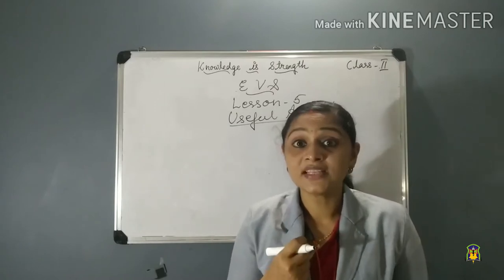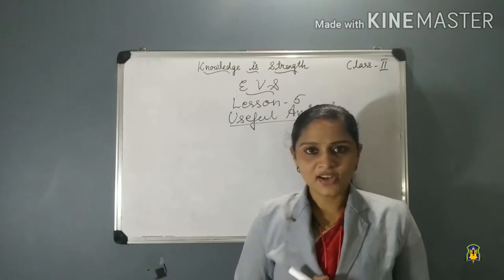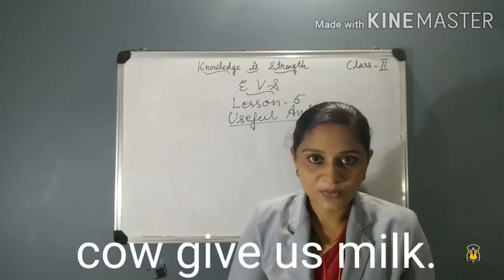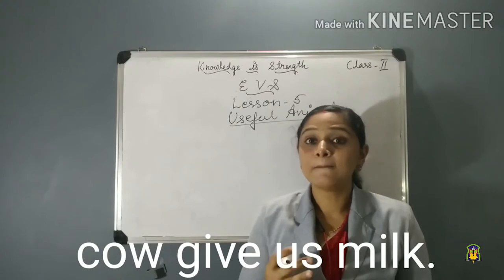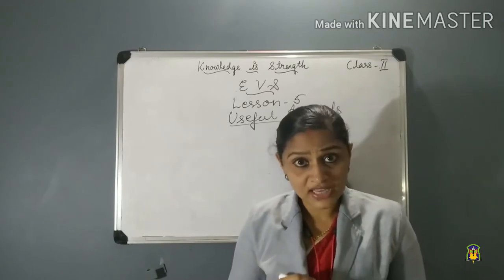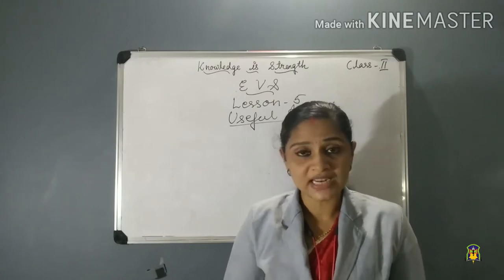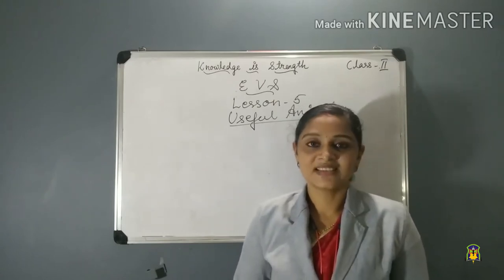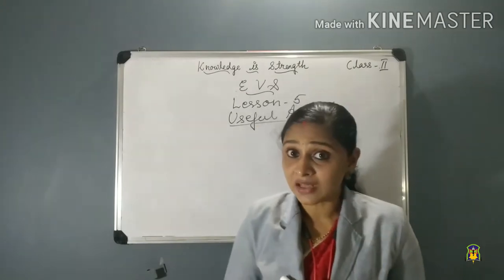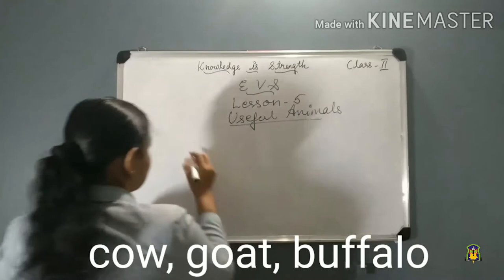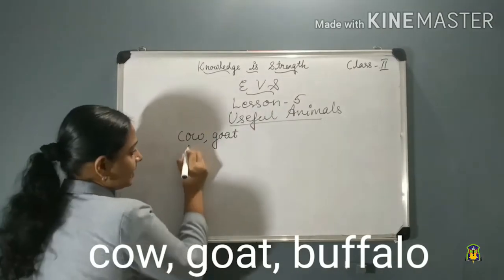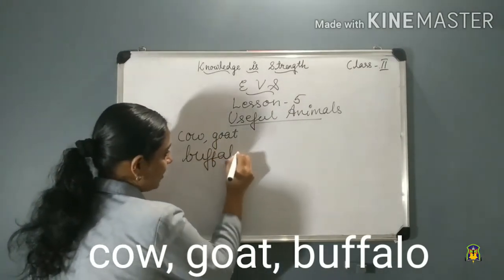Look — which animal is this? This is a cow, and cow gives us milk. Which other animals give us milk? Yes — goat and buffalo also give us milk. The spelling of cow is C-O-W, goat is G-O-A-T, and buffalo is B-U-F-F-A-L-O. These animals give us milk — M-I-L-K.